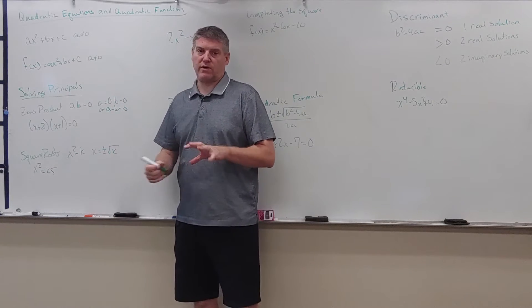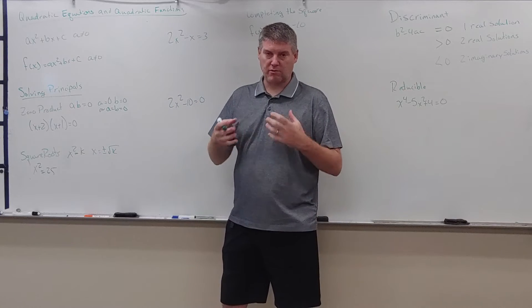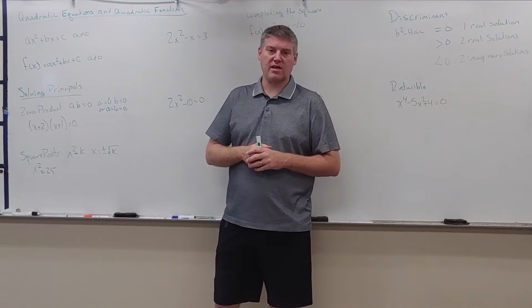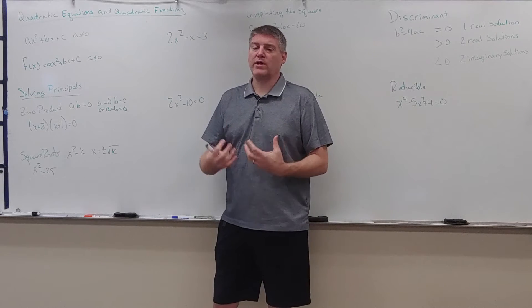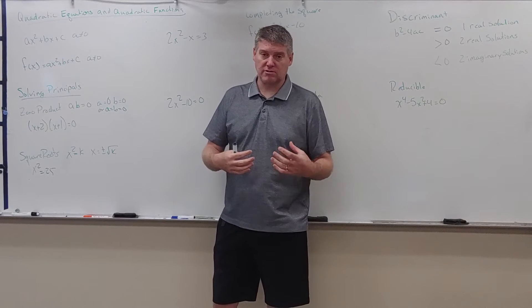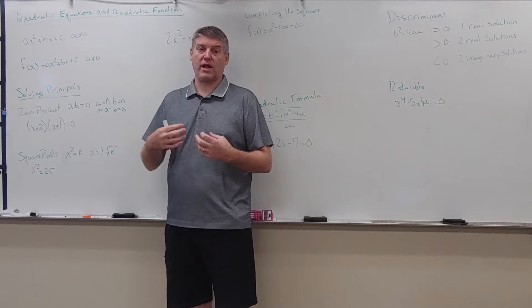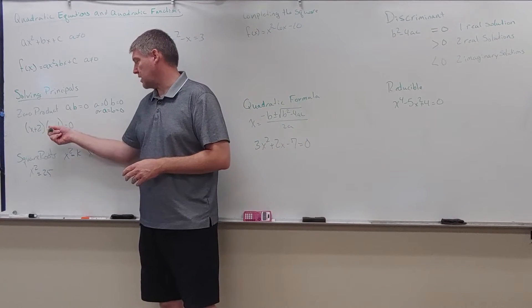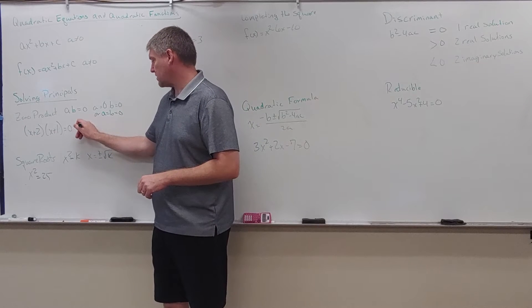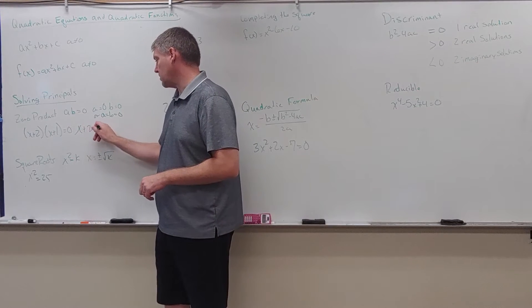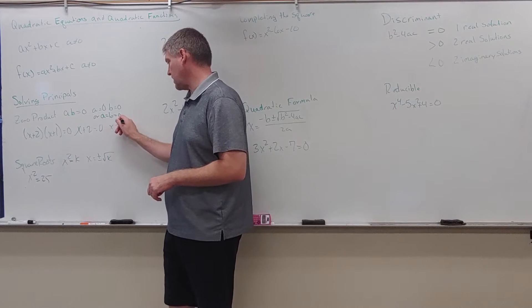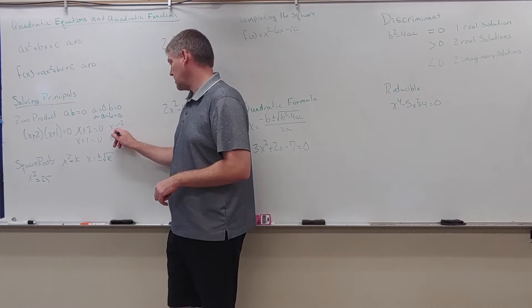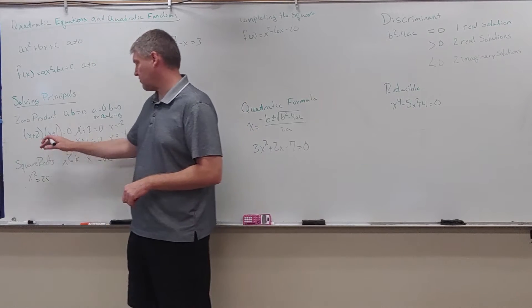When we're solving these, we have a couple of different solving principles. The first one is the zero product property. If a times b equals zero, then a equals zero, b equals zero, or both equal zero. So here, x plus 2 times x plus 1 equals zero means x plus 2 equals zero, so x equals negative 2, or x plus 1 equals zero, so x equals negative 1. My answers are negative 2 and negative 1.